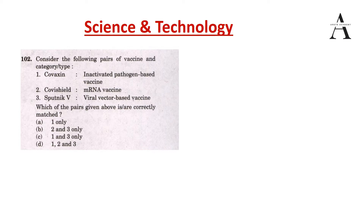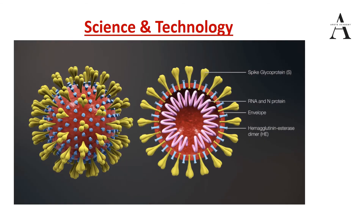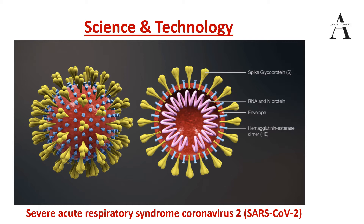Before we proceed - COVID-19 is a disease caused by a virus called SARS-CoV-2, whose full form is Severe Acute Respiratory Syndrome Coronavirus 2. It is a single-stranded RNA virus. If you look at the image, observe two important things: the yellow aspect which is the spike protein, and the purple aspect which is the RNA and N protein.